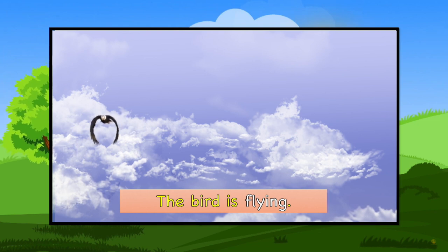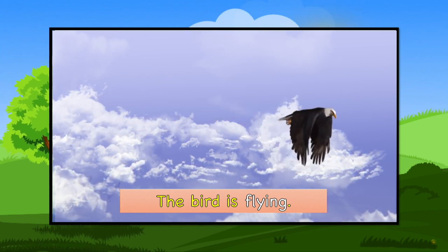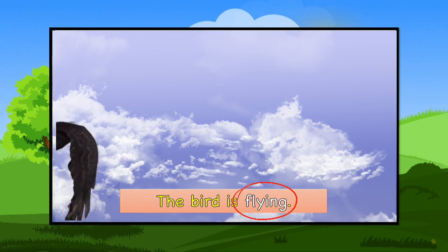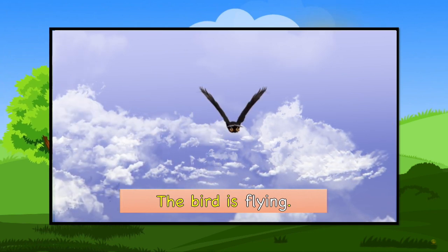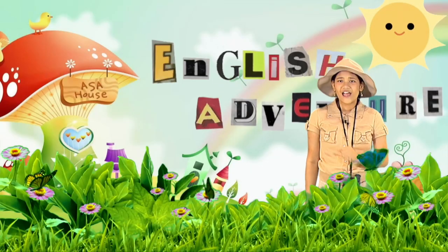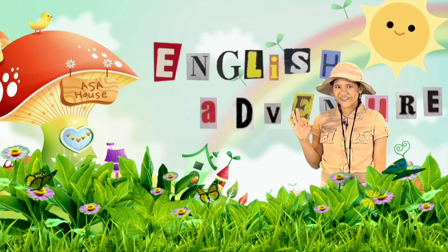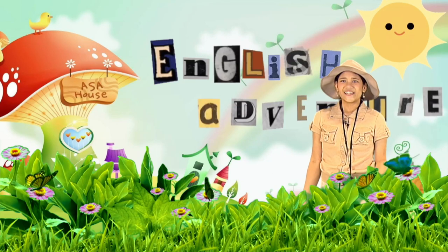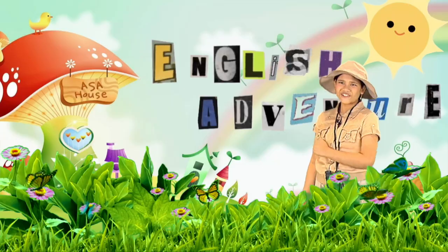Kids, can you guess what the bird is doing? The bird is flying. It's flapping its wings to fly. So the action word here is fly. How are you feeling, kids? Still doing okay? Let's continue some more.